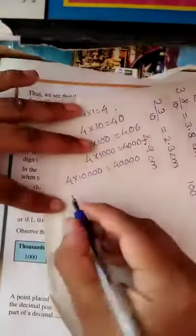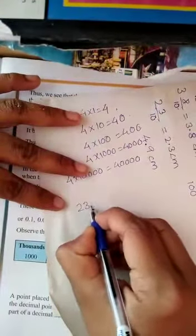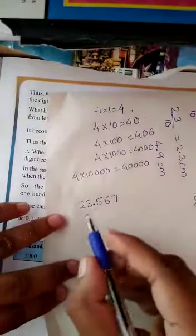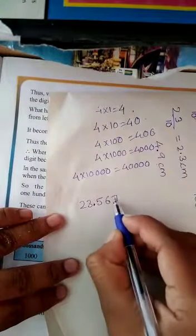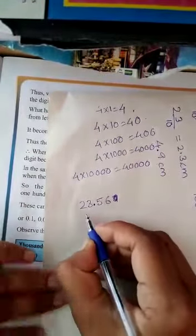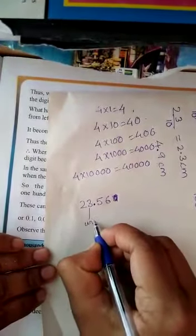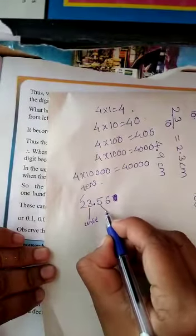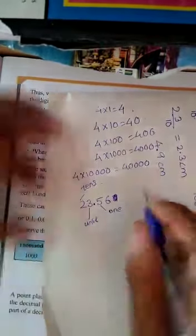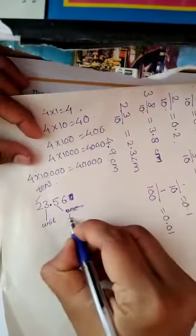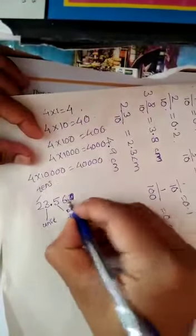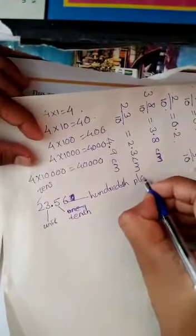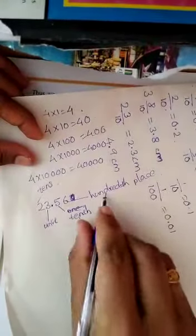Now, consider the number 23.567. There's a decimal point, therefore it is also a decimal number. It has only 2 digits before the decimal: this is unit place, this is 10 place. After the decimal: this is 1/10th or 10th place, this is 100th place.